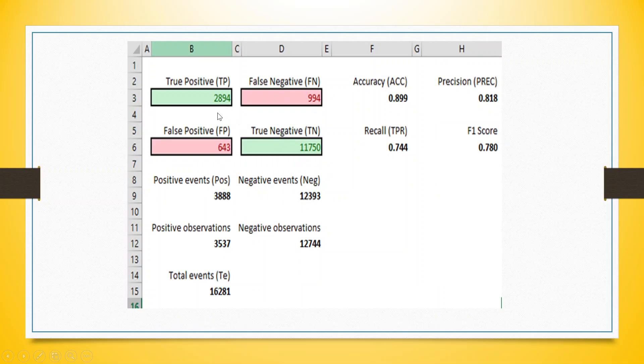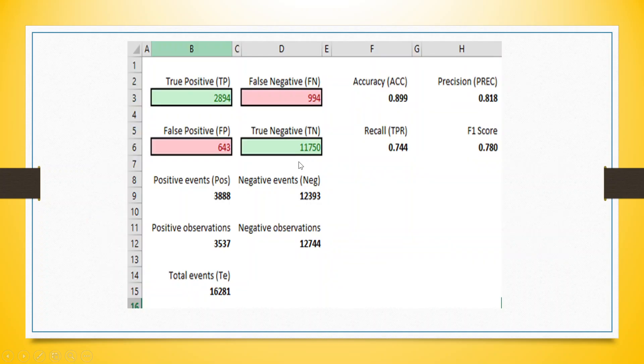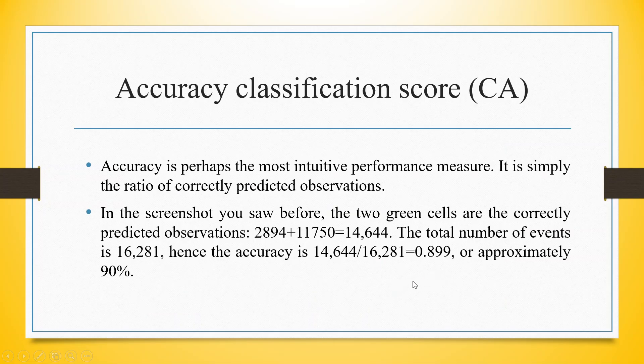So what is our classification accuracy? Summation of all green divided by summation of all green plus summation of pink. So 2894 plus 11750, this two total divided by the total of all these four will give me the classification accuracy which is 0.899.